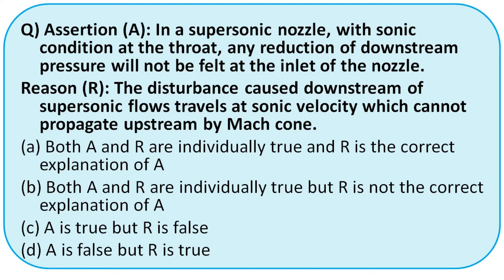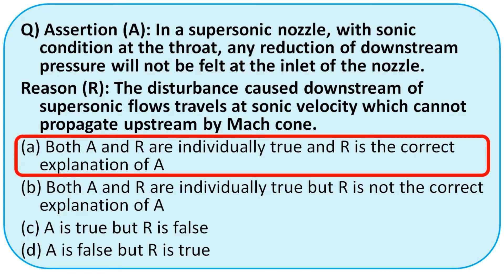Next question — Assertion A: in a supersonic nozzle with sonic condition at the throat, any reduction of downstream pressure will not be felt at the inlet of the nozzle. Reason: disturbances downstream of the supersonic flow travel at sonic velocity and cannot be propagated upstream by the Mach cone. Here, A is the reason for R, so the right option is option A.